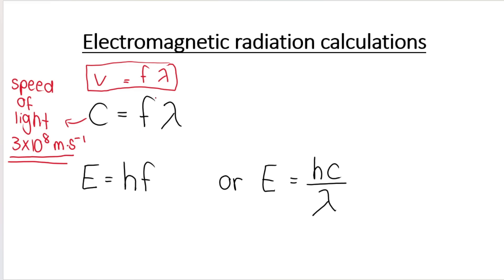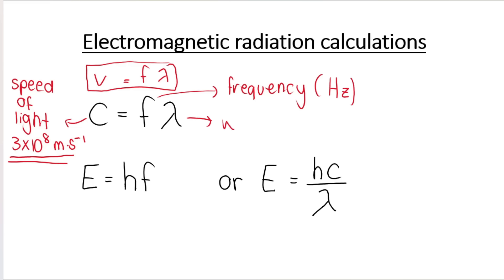F, as you should know, is frequency, and frequency's unit — what frequency is measured in — is hertz, Hz. The lambda symbol represents the wavelength of a wave. Very importantly, the wavelength of your wave must be in meters, if your speed is in meters per second, which it is. The speed of light is always 3 times 10 to the 8 meters per second, so our wavelength must be in meters.